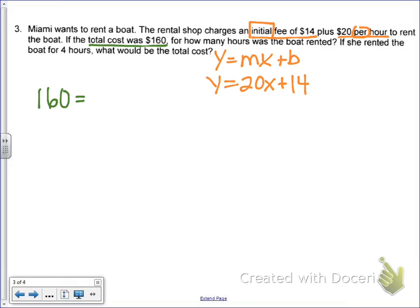Excuse me. So, again, we know that it's going to cost $160. And we want to know how many hours was the boat rented for. So to get x by itself, we need to subtract 14.